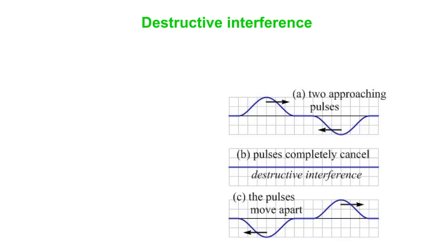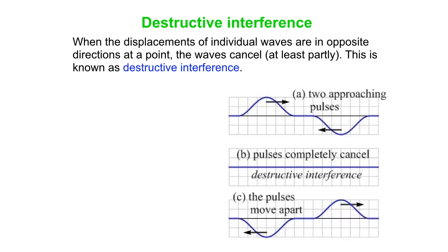As opposed to destructive interference. In this picture, you have two pulses approaching each other — they're mirror images. And at one instant in time, the string goes completely flat because they absolutely cancel each other out. Then almost by magic, the pulses reemerge from that string and move apart — it's like they never met. When the displacements of individual waves are in opposite directions, the waves cancel, at least partly. This is what we call destructive interference.